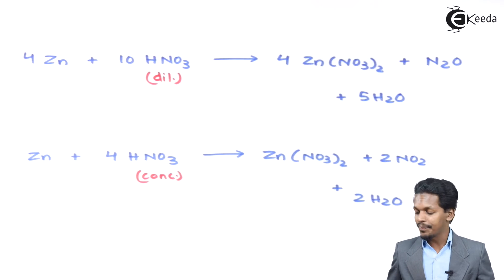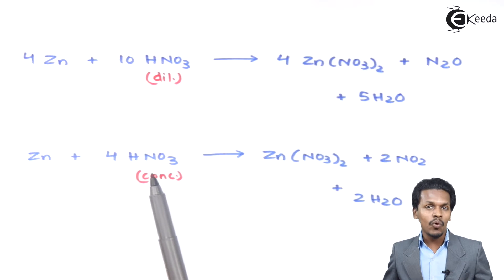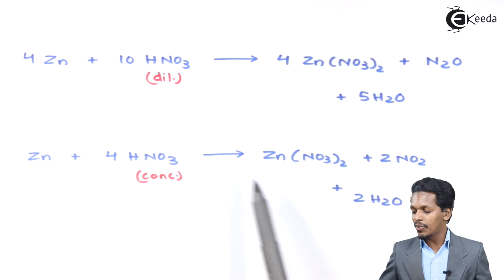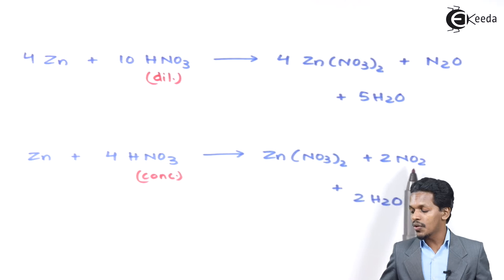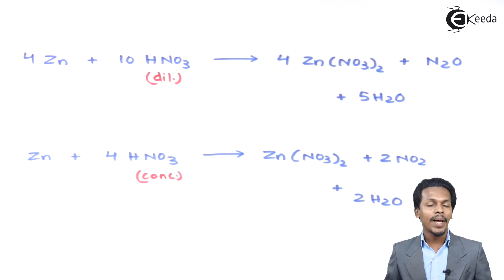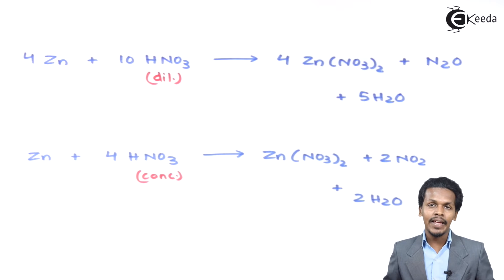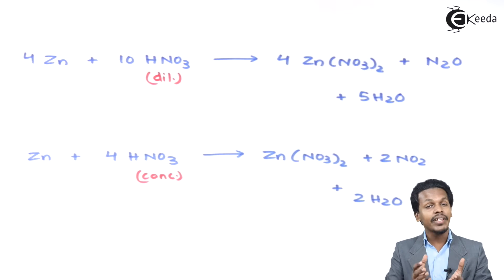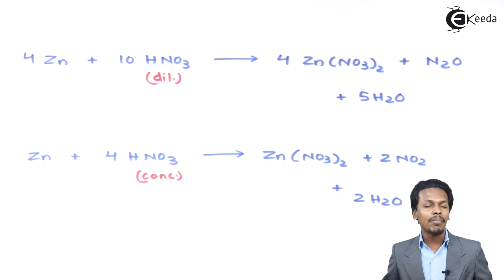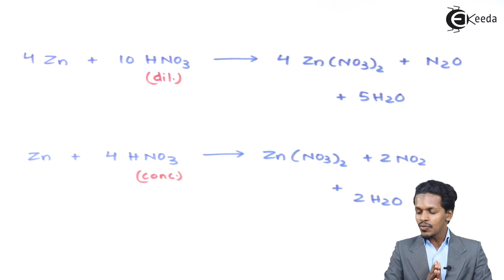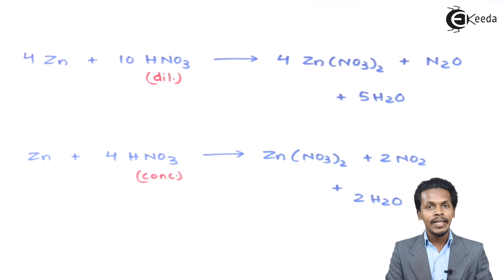When zinc reacts with concentrated HNO3 — four moles of HNO3 — the main product is zinc nitrate, along with two moles of NO2 (nitrogen dioxide) and two moles of H2O as byproducts. So zinc nitrate is formed in both cases, but the byproducts differ depending on whether dilute or concentrated HNO3 is used.